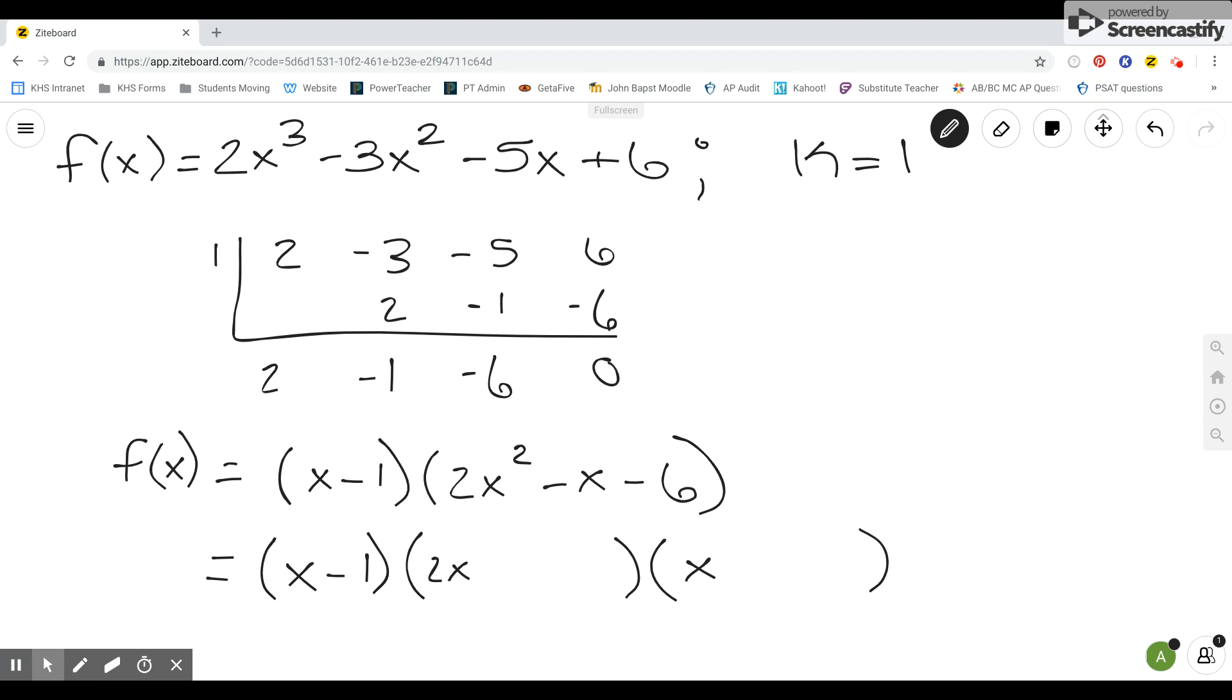And then we know we need to multiply to be negative 6. Well, that means our signs are either going to be plus and minus or minus and plus. We need to add to be a negative x. So if we're adding to be a negative x, then I know that when I multiply whatever term,